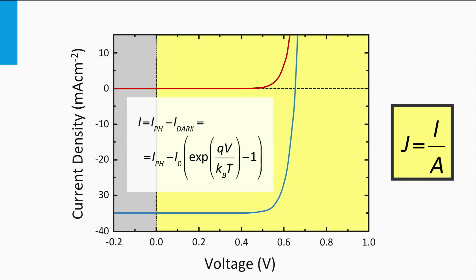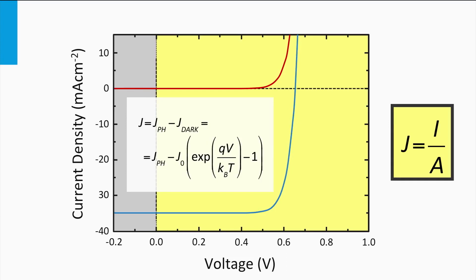If we assume that A is the area of a solar cell, the current density J is equal to the current I divided by the area A. The current density is expressed in mA per square centimeter or amperes per square meter. As you can see, the vertical axis of the current-voltage plots is already expressed in current density. From this point on we won't talk about IV curves but JV curves, and we will use current density.